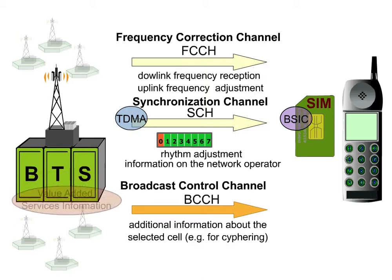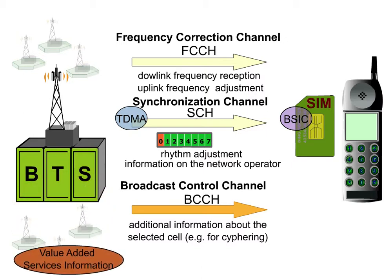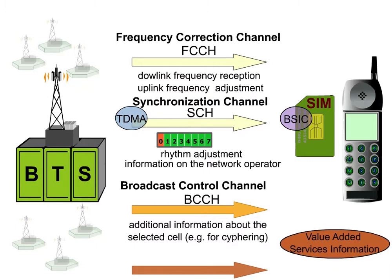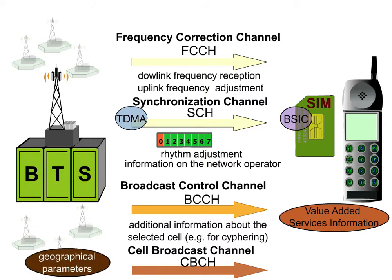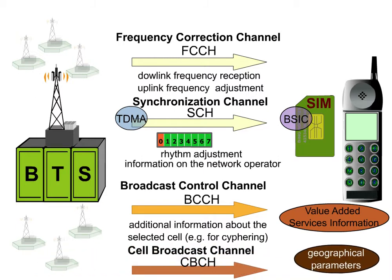For some value-added services, for example location-dependent services, additional information has to be transmitted from the BTS to the mobile. The cell broadcast channel, CBCH, is used for this purpose to transmit geographical parameters, for example the Gauss-Kruger coordinates of the BTS, to the mobile.